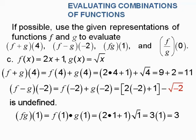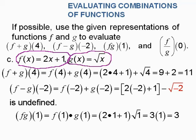Now we're going to look at some more functions where f of x equals 2x plus 1 and g of x equals the square root of x. For f plus g evaluated at 4: f of 4 is 2 times 4 plus 1, and g of 4 is the square root of 4. That gives us 9 plus 2, or 11.